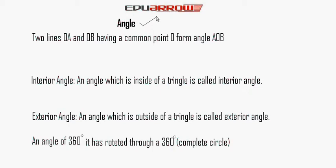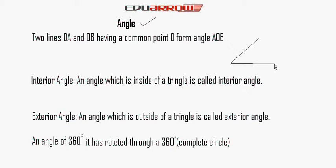Now about angles: two lines OA and OB having a common point O form angle AOB. Rays OA and OB have a common point O and make an angle — it is called angle AOB.